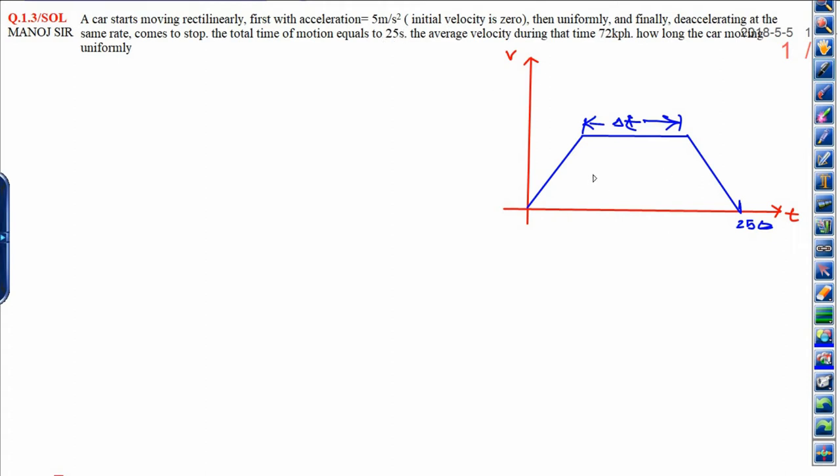The total time taken by this particular car is 25 seconds, and the average velocity is 72 km per hour. How long will the car move uniformly? You need to calculate the time, the time in which the car is moving uniformly.